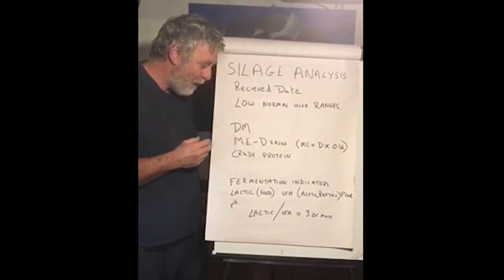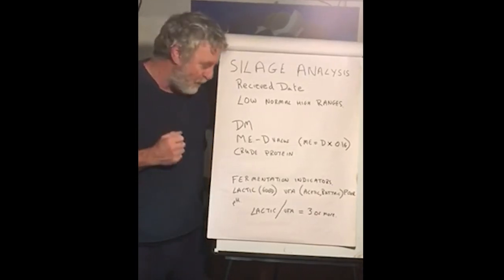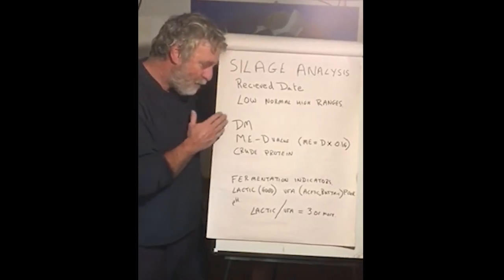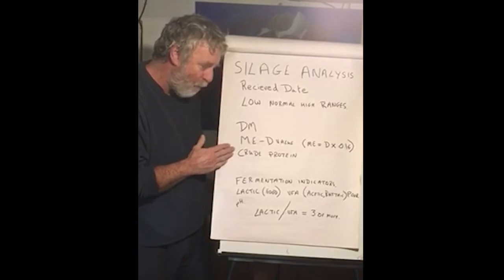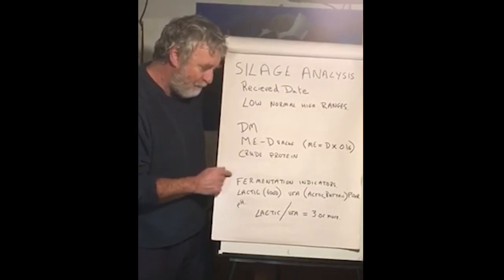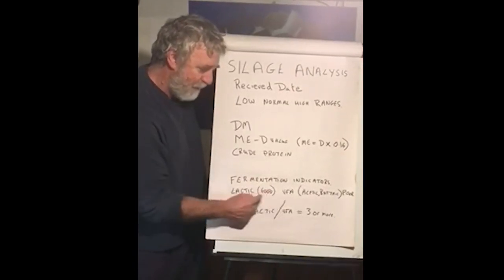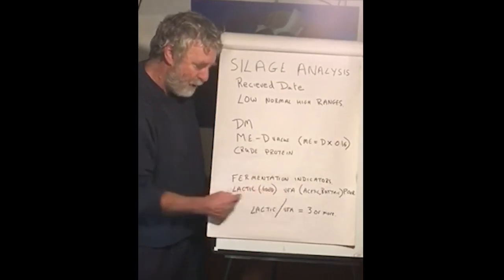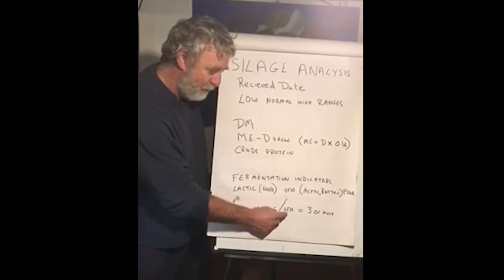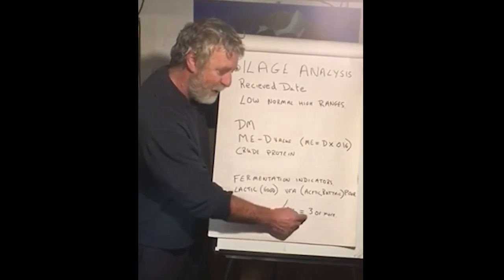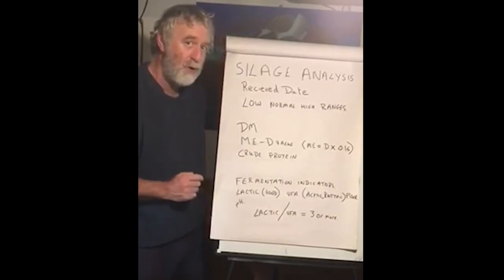Obviously maize is a high energy crop, so protein is far less important. And those are the sorts of things we should be looking for. In terms of fermentation indicators, it's the lactic and VFA that are important. Ideally we want to calculate the lactic divided by the VFA, and that should be three or more to show we've got a very good fermentation.